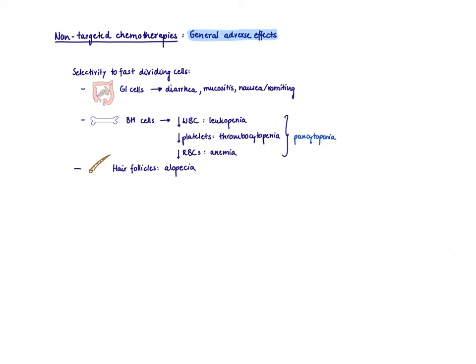Other fast-dividing cells in our body are the bone marrow cells. So as a consequence, all the cells that arise in the bone marrow, leukocytes, thrombocytes, platelets, red blood cells, are going to be lower, are going to be damaged.